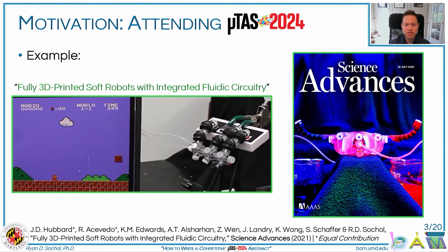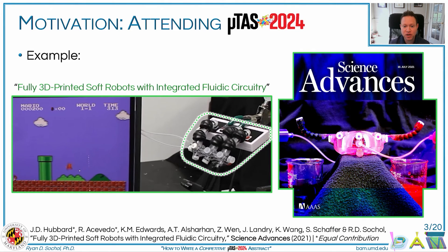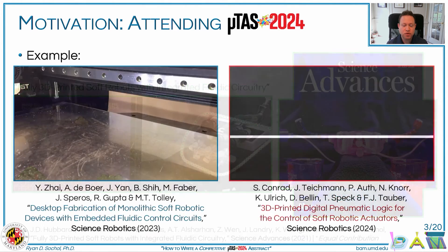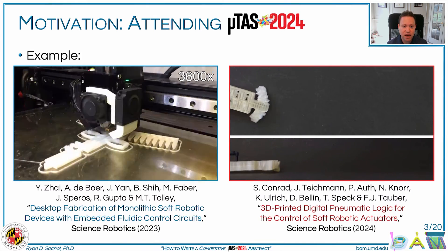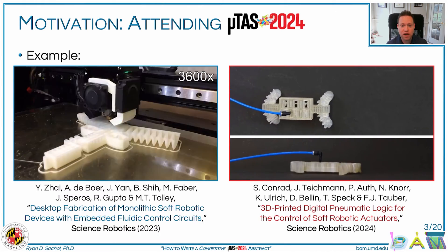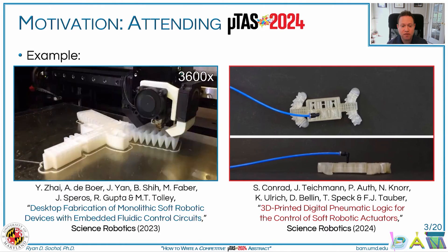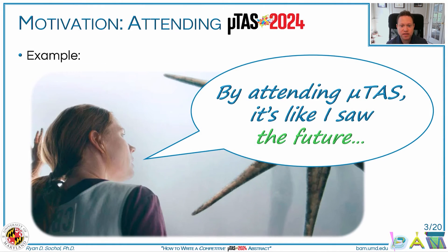It was nearly four years later when the actual journal paper was finally published with that soft robotic hand with microfluidic circuitry. It wasn't really until this past year that we've seen groups take this concept presented at Microtest 2017 and develop other types of 3D printed soft robots with integrated fluidic logic. By attending Microtest, it's a way to get a glimpse into where an entire field is going and get a head start in that direction.